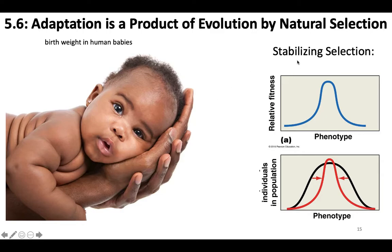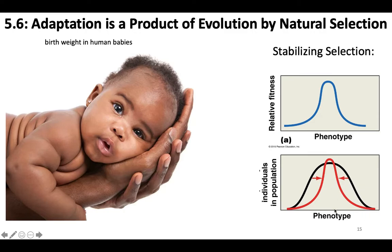You can also have stabilizing selection, where selection favors the median or mean phenotype — there's higher fitness for the mean phenotype over phenotypes at the extremes of the distribution. Human birth weight is the classic example: very small birth weight has a very low survival rate and decreased fitness, and very large birth weight creates other birth complications and also decreases fitness. So the highest fitness is at the mean — that's stabilizing selection.